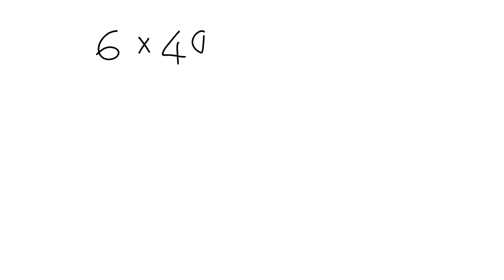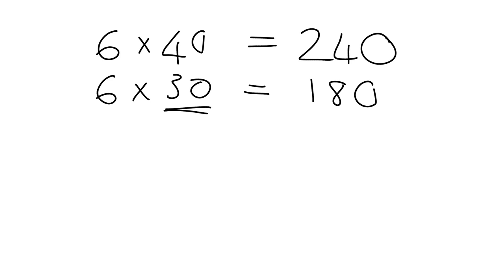So for example, if you had 6 times 40, you see it's the same as 6 times 4, which is 24, but because it's 40, you have to multiply by 10, so you put an extra 0 on the end. Similarly, 6 times 30 - well, you can just use your fact 6 times 3 is 18, but you've got to multiply by 30, not just 3, so you put another 0 on the end.